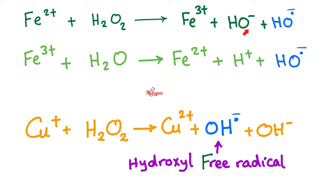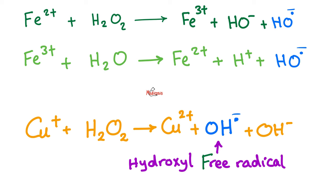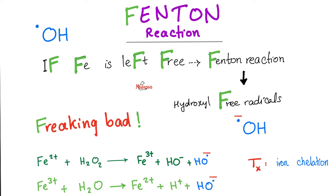Let's talk about iron and copper - why are they toxic? Because of something called the Fenton reaction. If iron is left free, or if copper is left free, they will give me hydroxyl free radicals. Here's how I remember it: if Fe is left free, by the Fenton reaction it will give me hydroxyl free radicals - freaking bad. That's why in your physiology, someone has to be carrying that iron all the time. In your blood, it's bound to transferrin. In your tissue, it's bound in the form of ferritin.